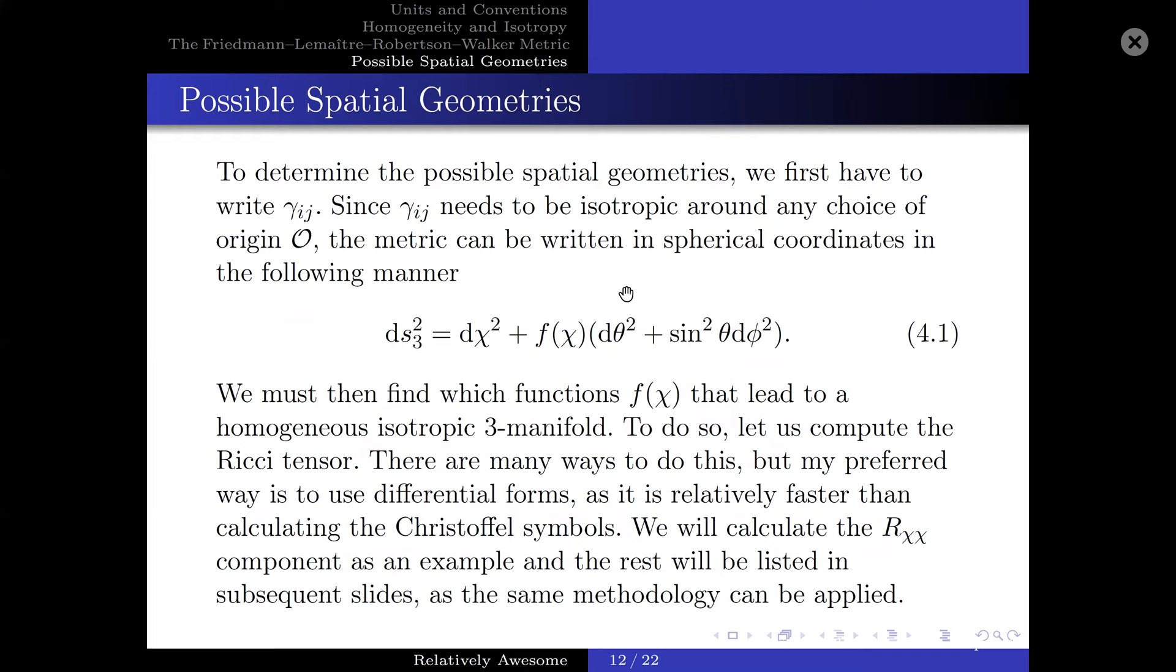Now, let us talk about some of the possible spatial geometries under the condition of homogeneity and isotropy. To determine the possible spatial geometries, we first have to write γ_ij. γ_ij needs to be isotropic around any choice of origin O. So, the metric can be written in spherical coordinates in the following manner. Now, we must find functions f, f(χ), that lead to a homogeneous isotropic three-manifold. And to do so, let us compute the Ricci tensor. And there are many ways to do this, but my preferred way is to use differential forms, as it is relatively faster than calculating the Christoffel symbols.